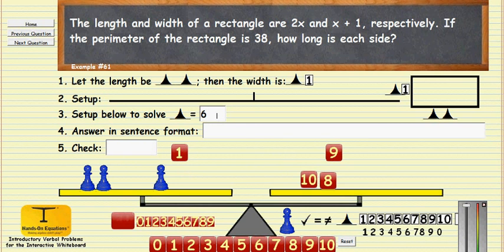We now need to write the answer in sentence format. We notice that the length consists of two pawns and the width pawn and one. So the width, pawn and one would be six and one would be seven. The width is seven.